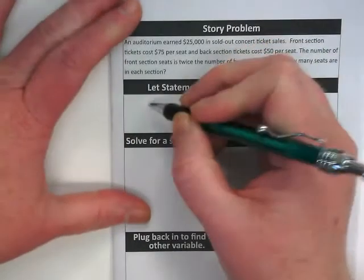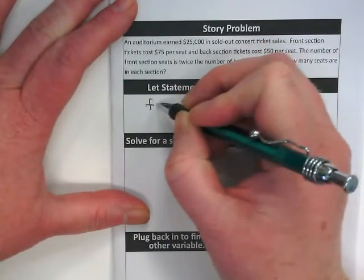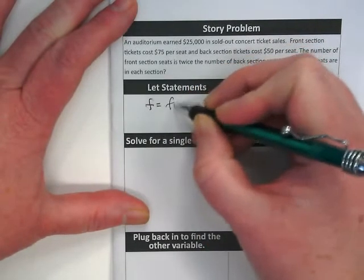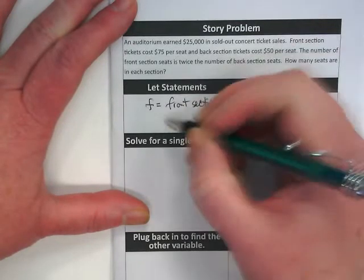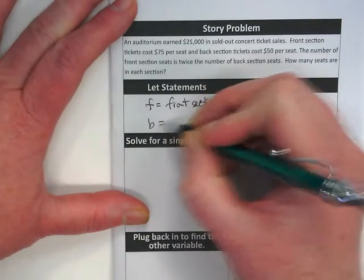So we're going to have F equal the front section and B equals the back section.